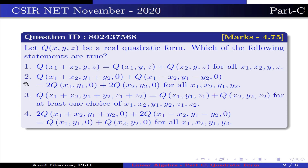Option 2: Q(x1+x2, y1+y2, 0) plus Q(x1−x2, y1−y2, 0) is equal to 2·Q(x1, y1, 0) plus 2·Q(x2, y2, 0) for all x1, x2, y1, y2.